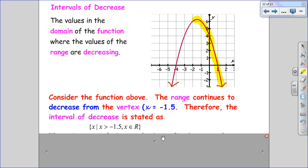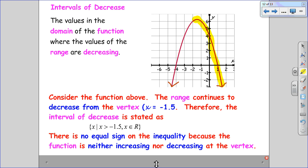So we can write x is greater than negative 1.5 and we don't put the equal to sign again because it's not increasing or decreasing at the vertex.